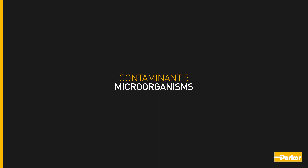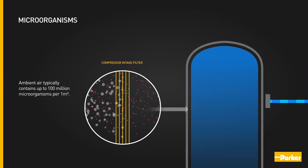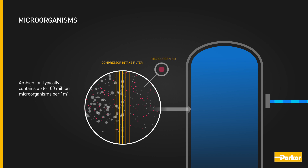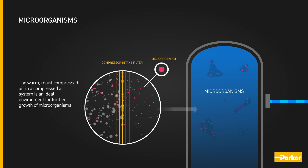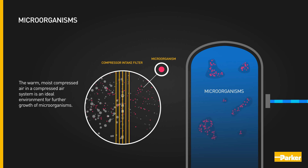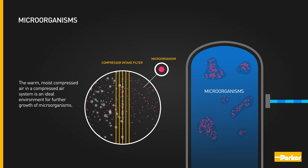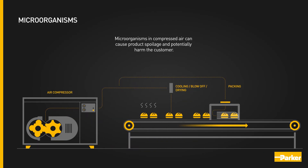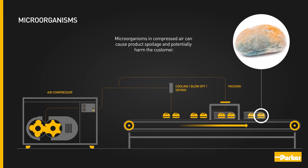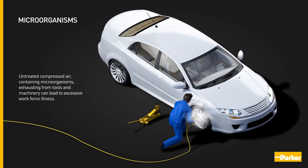Contaminant five: micro-organisms. Ambient air typically contains up to 100 million micro-organisms per cubic metre. The warm, moist compressed air in a compressed air system is an ideal environment for further growth of micro-organisms. Micro-organisms in compressed air can cause product spoilage and potentially harm the customer. Untreated compressed air containing micro-organisms exhausting from tools and machinery can lead to excessive workforce illness.